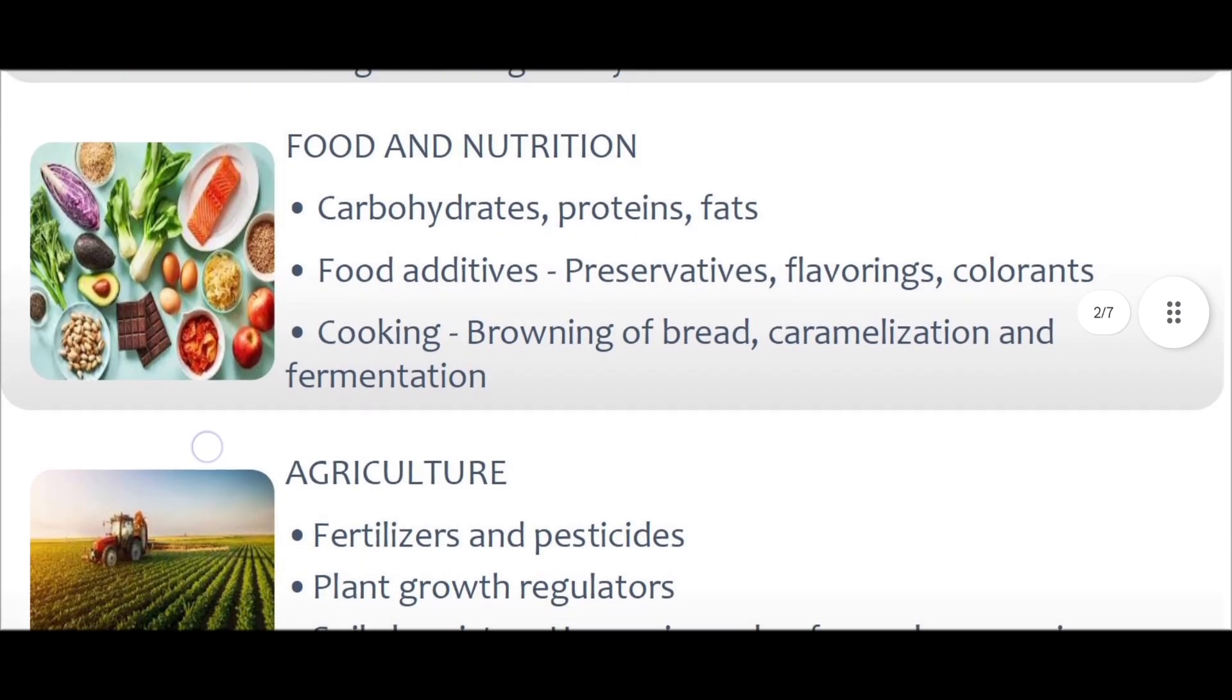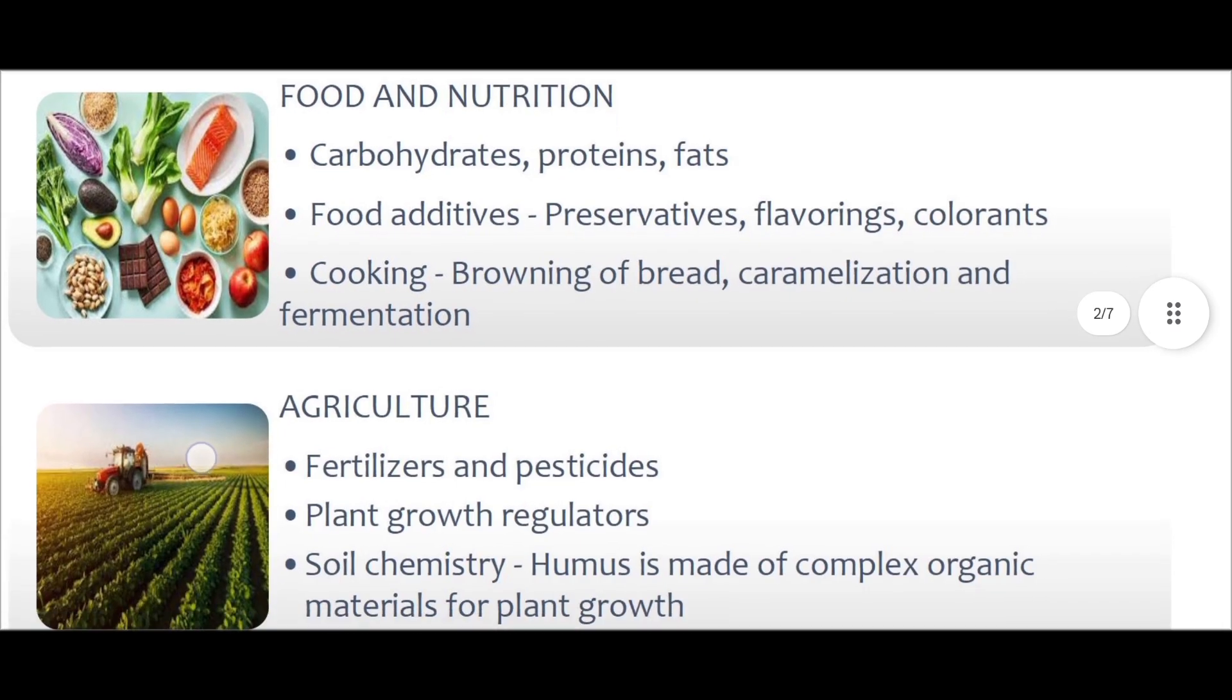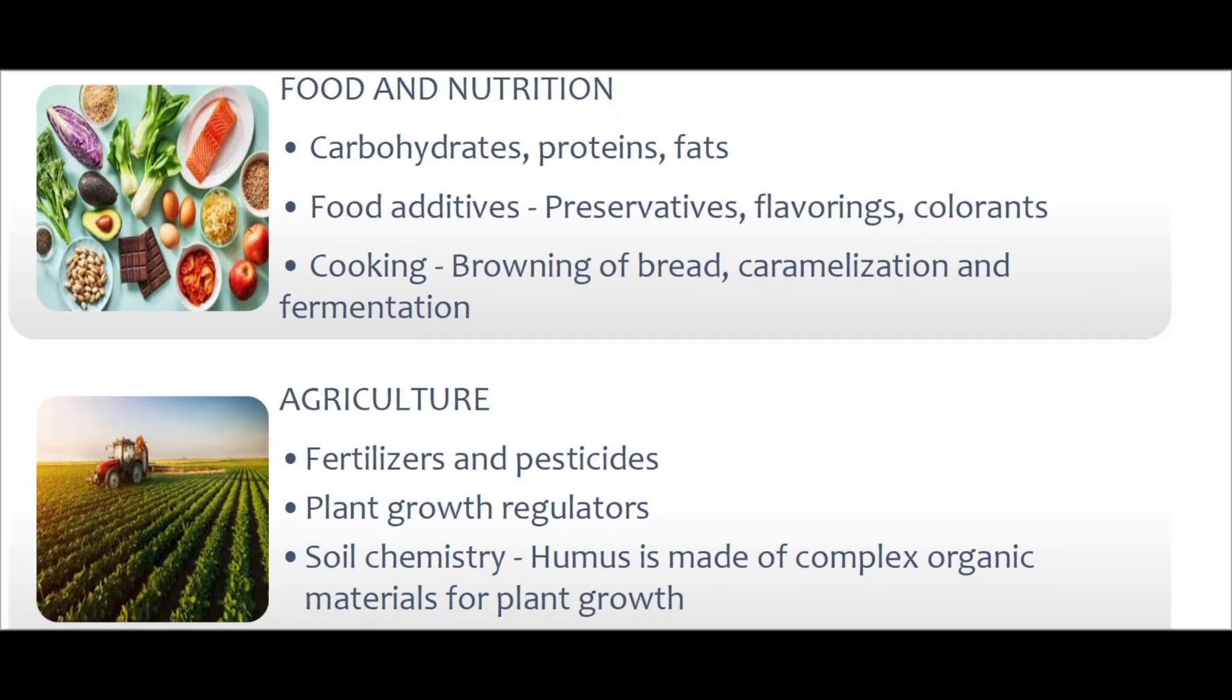When it comes to food and nutrition, you have carbohydrates, proteins, fats, and then there are food additives such as preservatives, flavorings, and colorants. When it comes to cooking, the browning of bread, caramelization, and fermentation can be explained by organic chemistry as well. In agriculture, fertilizers and pesticides, plant growth regulators make use of organic compounds, and organic chemistry is used to explain soil chemistry as well.